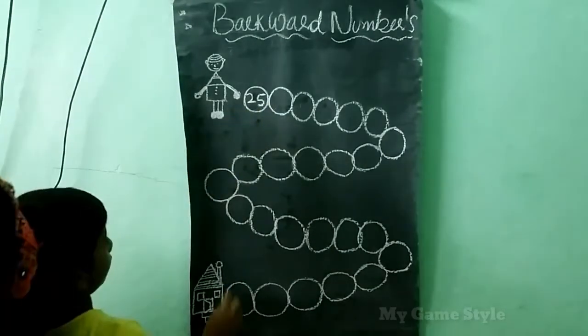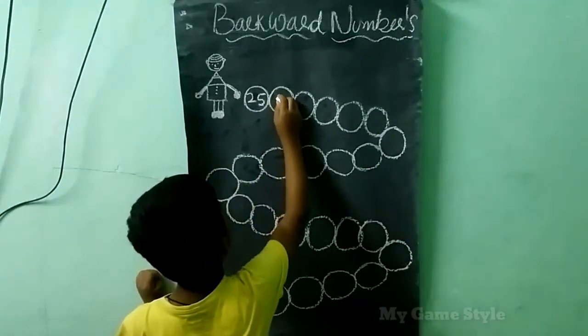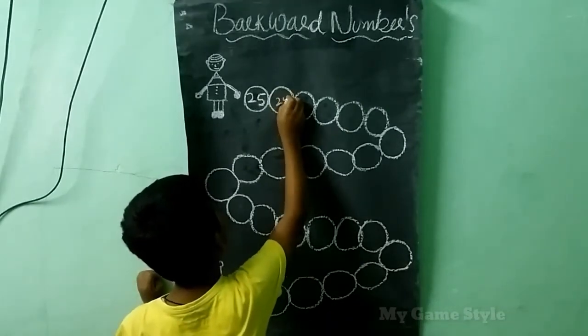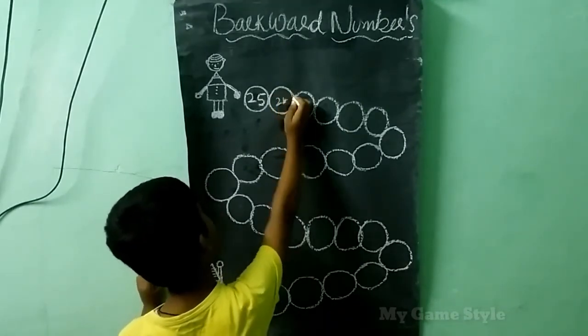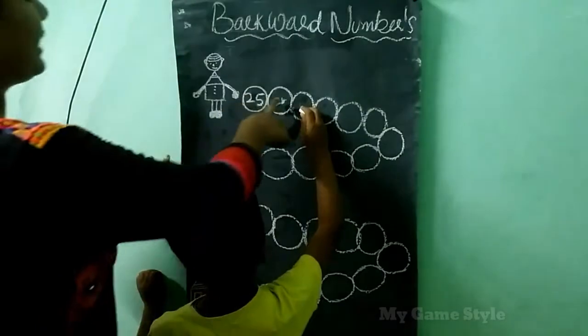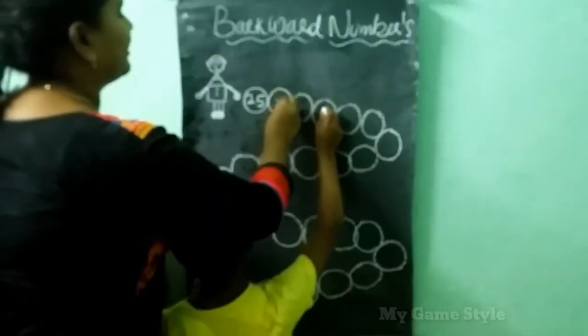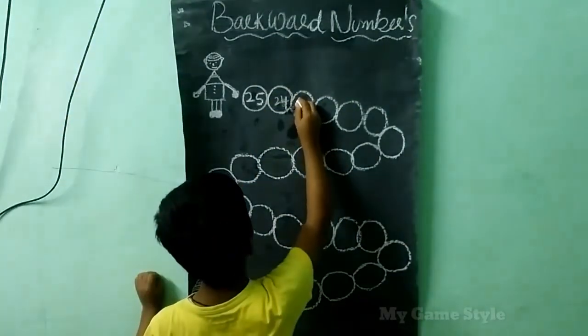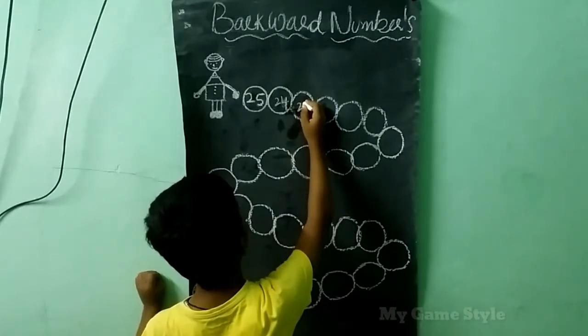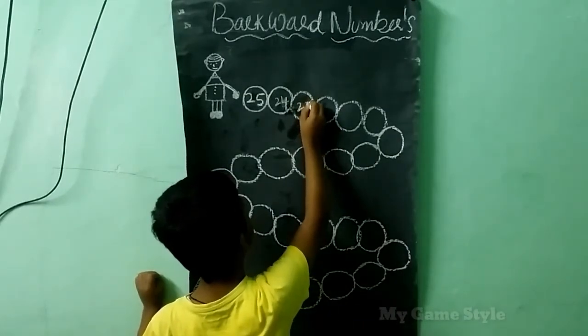This is a 25. Write backward numbers. Read and write. 24. Read, write quickly. 2, 2, 3, 23.